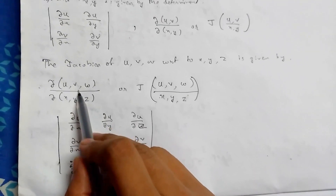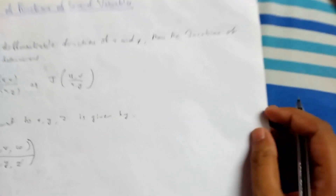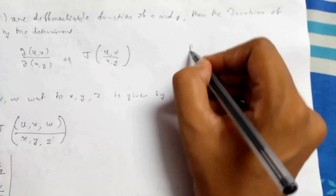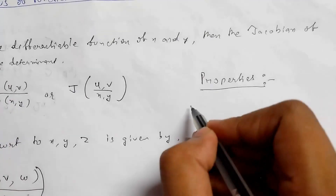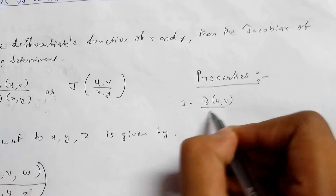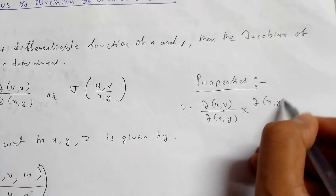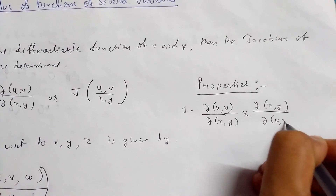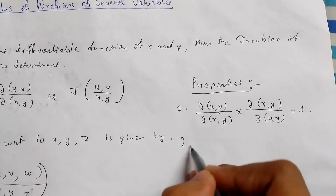Now some properties. The first property is: del(u,v) upon del(x,y) times del(x,y) upon del(u,v) equals one.